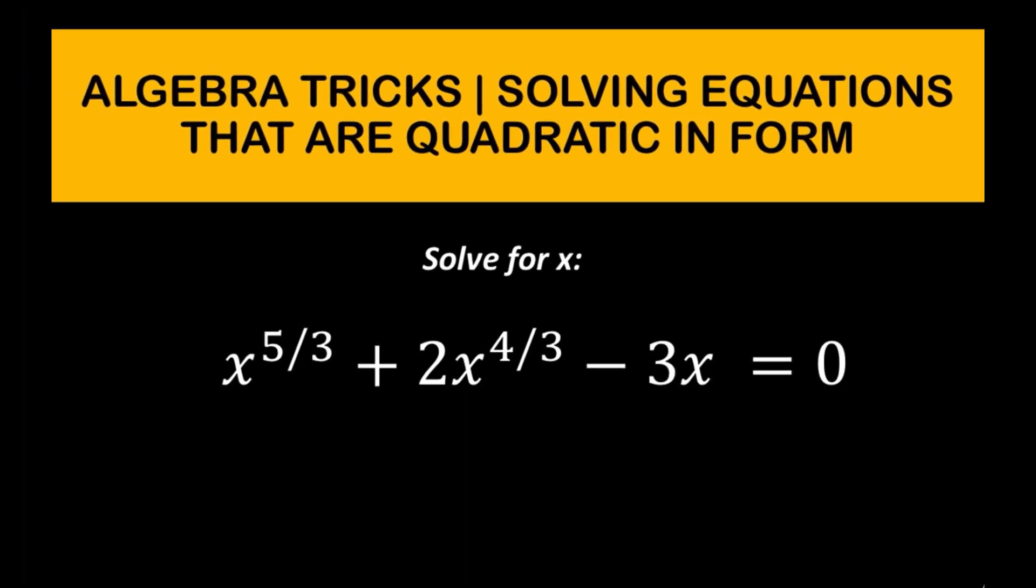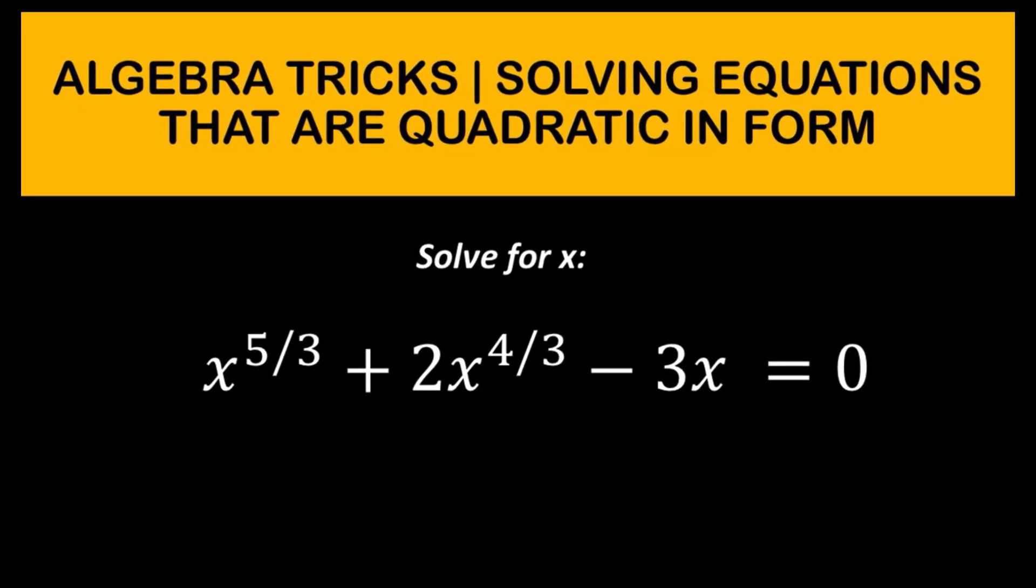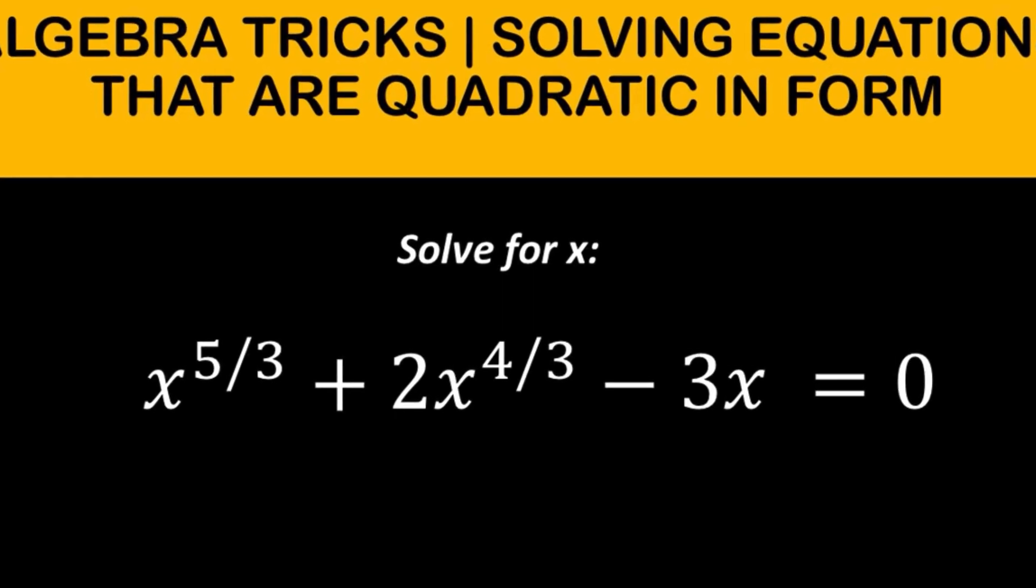Here is our problem. Let's say we are asked to solve x raised to 5 over 3 plus 2x raised to 4 over 3 minus 3x is equal to 0.